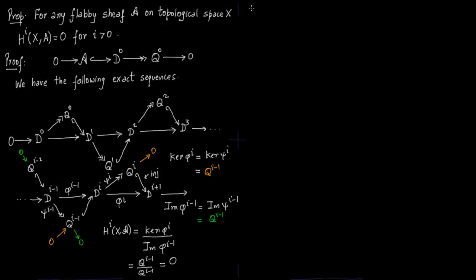A very important consequence of this is that if you have a short exact sequence of sheaves, say from 0 to A to B to C, and these sheaves are flabby, in fact if A and B are flabby, C will automatically be flabby.